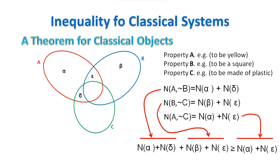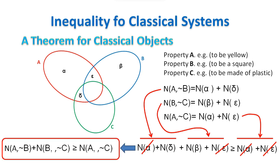The proof is quite easy. We remove the number of objects in the sets that are common to both sides of the inequality, and we are left with the statement that the number of objects in delta plus the number of objects in beta is greater than or equal to zero. Which is obviously true. We get eventually an inequality valid for classical objects.